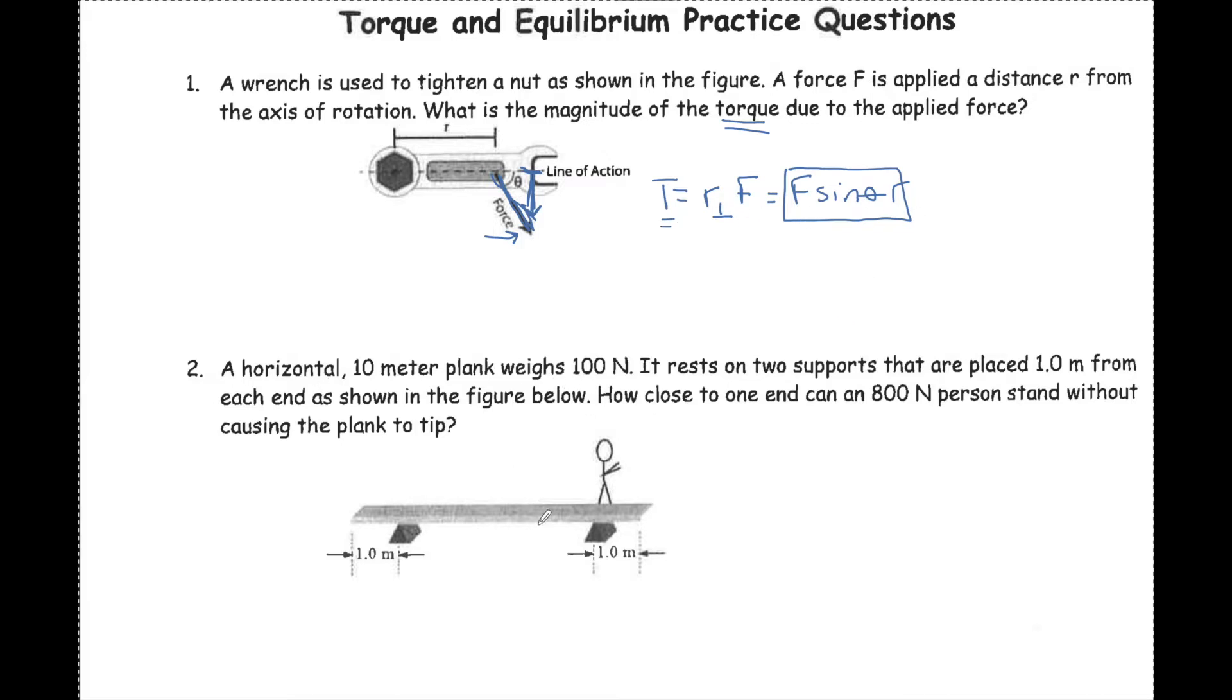Here we have a 10 meter plank that has a weight of 100 newtons, and the weight acts at its center of mass. So Fg is 100 newtons. If this position is 1 meter from one end of the 10 meter plank, the R from the center of mass to the fulcrum point is 4 meters.